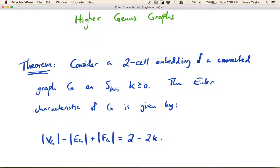For example, if you're in the plane, k=0, and we get our regular version: vertices minus edges plus faces equals 2. If you're on the torus, it should be vertices minus edges plus faces equals 0, because k=1. Or if you're on the double torus, it should be negative 2, and so forth. So we're just going to look at a couple of examples of this.